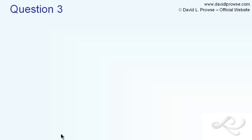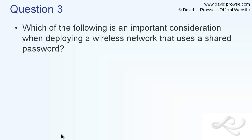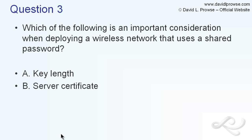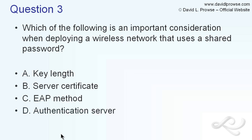Question three: Which of the following is an important consideration when deploying a wireless network that uses a shared password? The answers are A, key length; B, server certificate; C, EAP method; and D, authentication server.